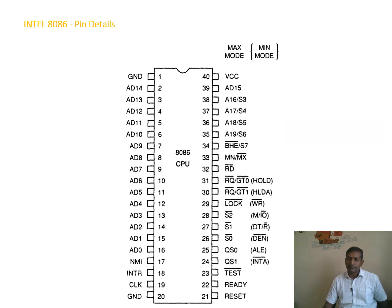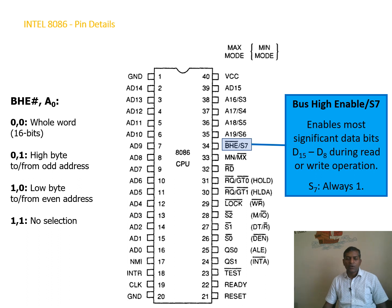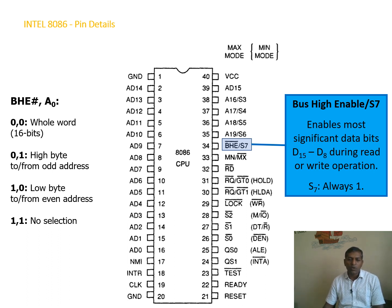The BHE (Bus High Enable) signal is multiplexed with S7. BHE allows D0 to D15 lines to be used for communicating 16-bit data. If A0 and BHE are both zero, all lines D0 to D15 are used for 16-bit data. If zero and one, only the high bus D8 to D15 is used. If one and zero, only the low bus D0 to D7 is used. If both are one, no bus is selected.